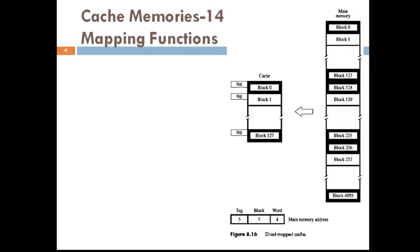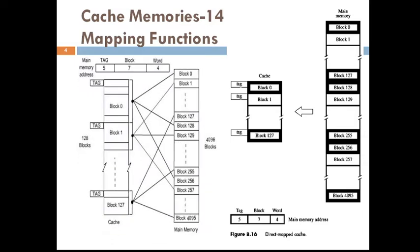We make use of the modulo function, so block J from the main memory is mapped to block J modulo 128 in the cache. This means that whenever one of the main memory blocks — for example, 0, 128, 256, and so on — is loaded into the cache, it is stored in cache block 0. Similarly, blocks 1, 129, 257, etc. are stored in cache block 1, and blocks 2, 130, 258, and so on are stored in cache block 2.